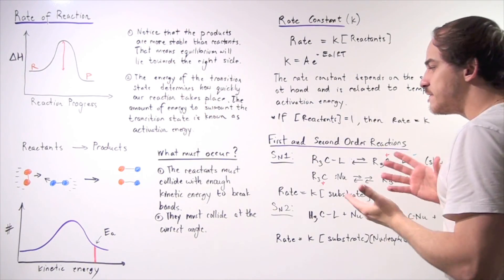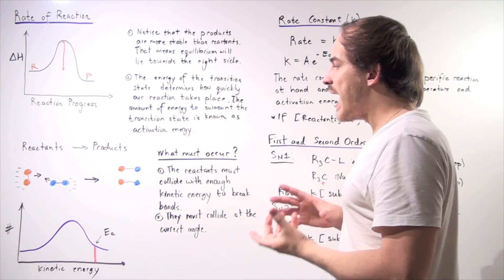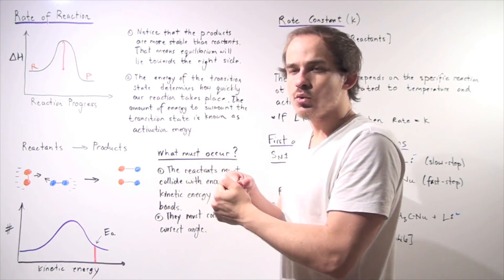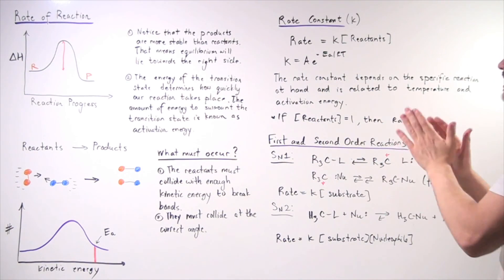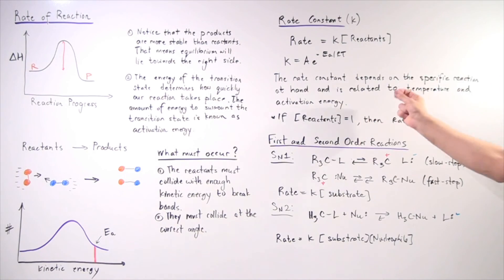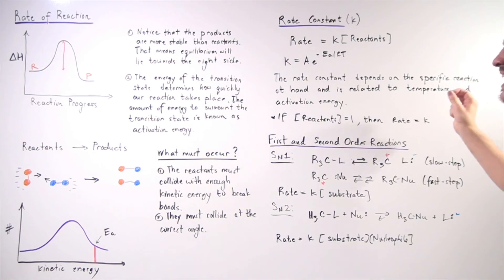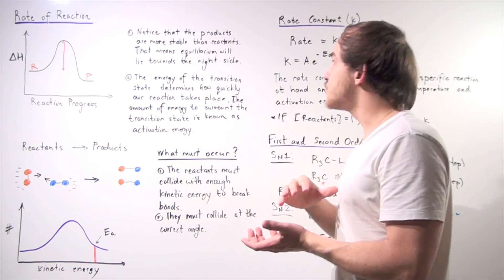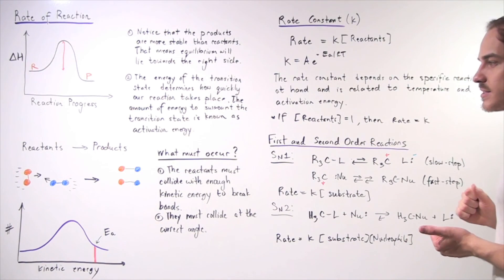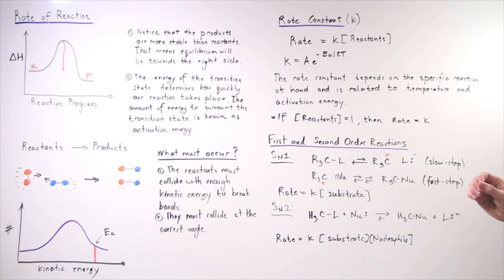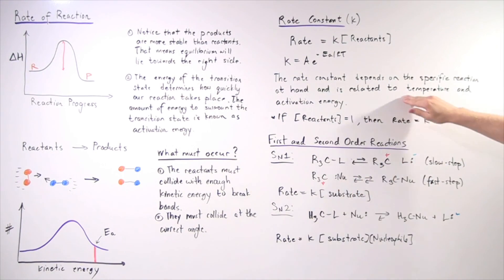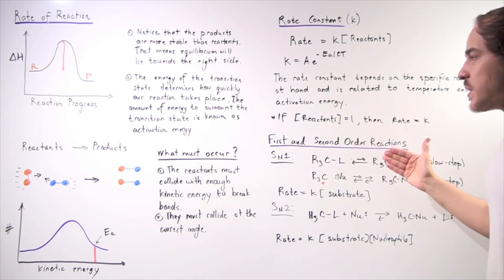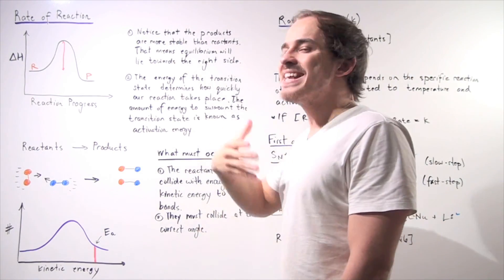A is our steric factor that essentially depends on the orientation of our molecules and the frequency with which our molecules collide. The rate constant depends on the specific reaction at hand — different reactions have different rate constants. This rate constant is related to two important things: temperature and activation energy.